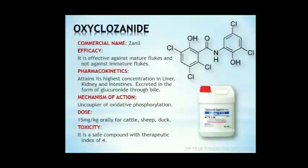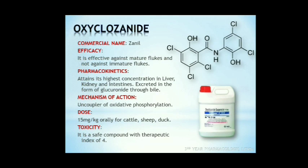Next is oxyclozanide. Oxyclozanide is marketed under the name Zanil and was introduced in 1966. It attracts highest concentration in liver, kidney, and intestines and is excreted in the form of glucuronide into bile as an active metabolite. It is effective against adult flukes and does not possess efficacy against immature flukes. It has poor action against rumen flukes like Paramphistomum. It is used in duck farms for elimination of flukes like Notocotylus and Echinostomatidae. Its action involves interference with oxidative phosphorylation detrimental to Fasciola hepatica. Dose: 50 mg/kg orally for cattle and sheep, and the same dose in ducks orally. The therapeutic index of oxyclozanide is 4-fold and therefore it is a very safe drug.